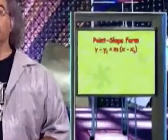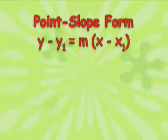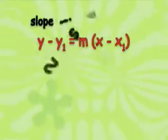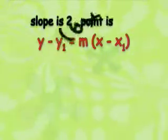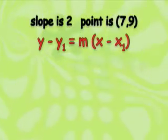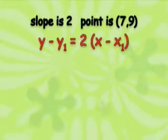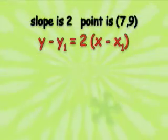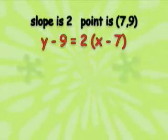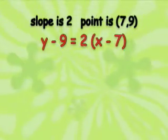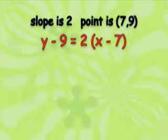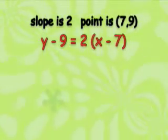This form of the equation is valuable in a very specific case: when you know the slope of a line and one point through which the line passes. Let's say you know the slope of a line is 2, and the line passes through the point 7, 9. You can write the equation of the line in point-slope form by replacing the M with 2, the X1 with 7, and the Y1 with 9. The equation of the line is Y minus 9 equals 2 times X minus 7.